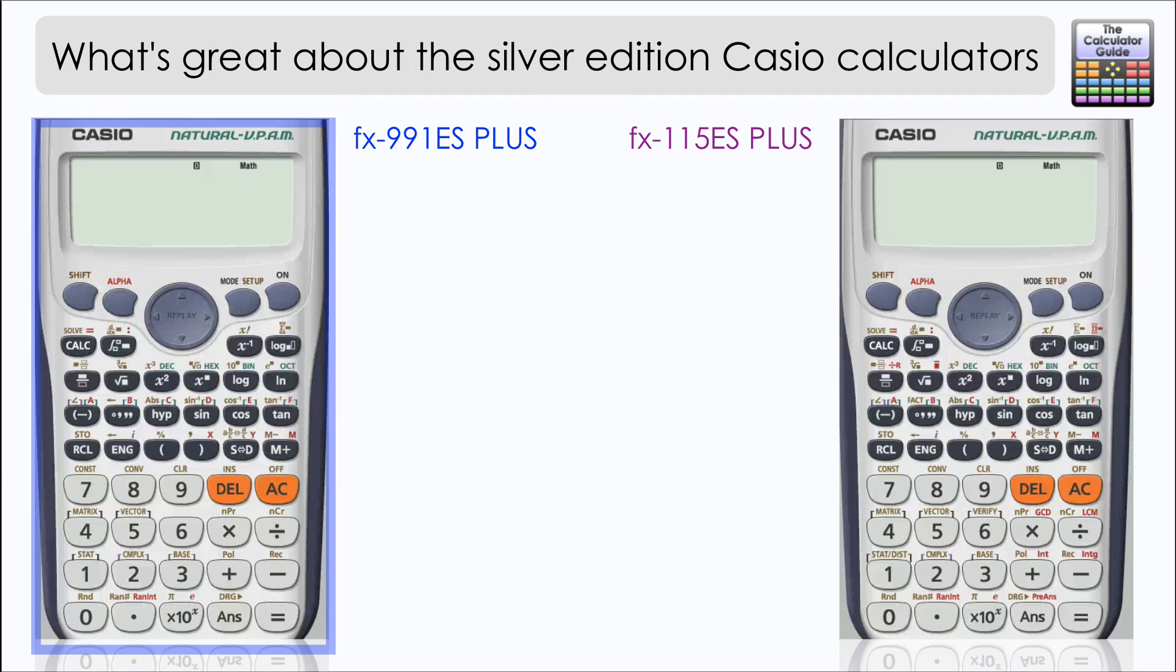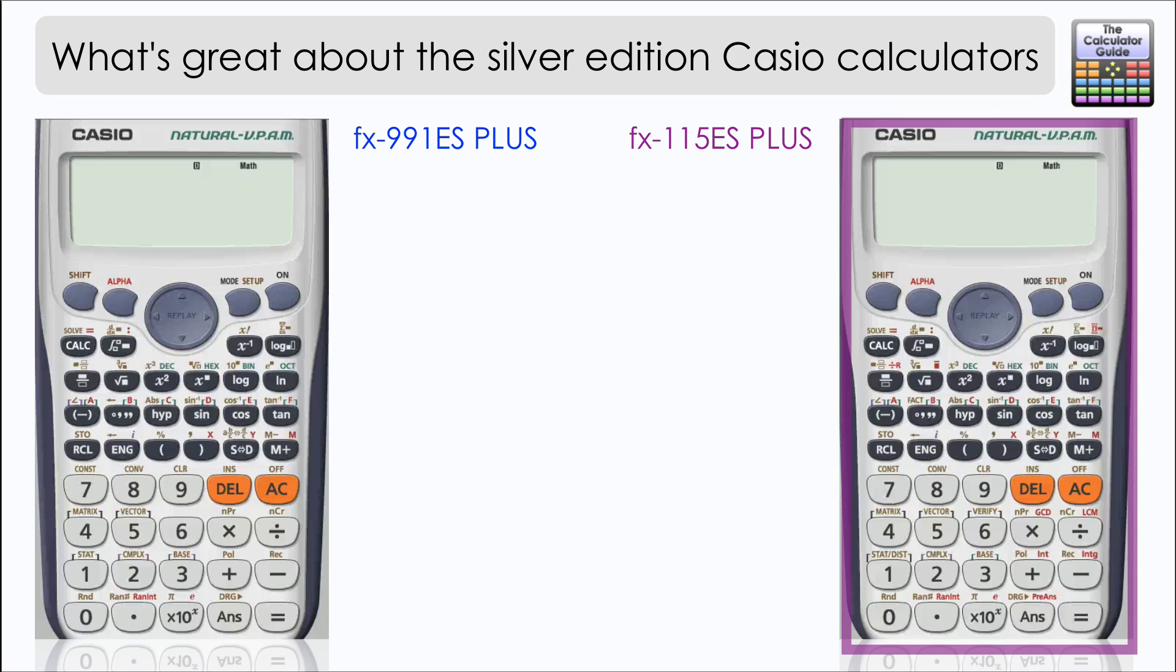We have on the left hand side the FX991ES+, the standard silver model in the UK, and on the right hand side we have the FX115ES+, the standard silver model in the US. We're going to compare the features and functions, so let's have a look now.